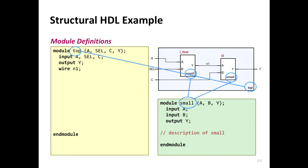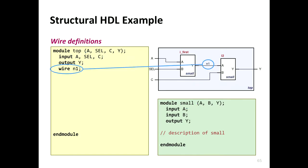So you have the top module, the small module, and a wire connecting the two small modules. There is also the concept of 'register', which people often confuse with wire. For the combinational part of the course, just understand that wire creates combinational logic. When Frank talks about sequential circuits tomorrow, you'll understand the difference between wire and register. For now, wire is simply a connection between two points.